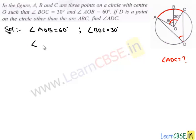So by combining these two we get angle AOC, that is the angle subtended by the arc at the center, and it is equal to the sum of 60 and 30, that is 90 degrees.